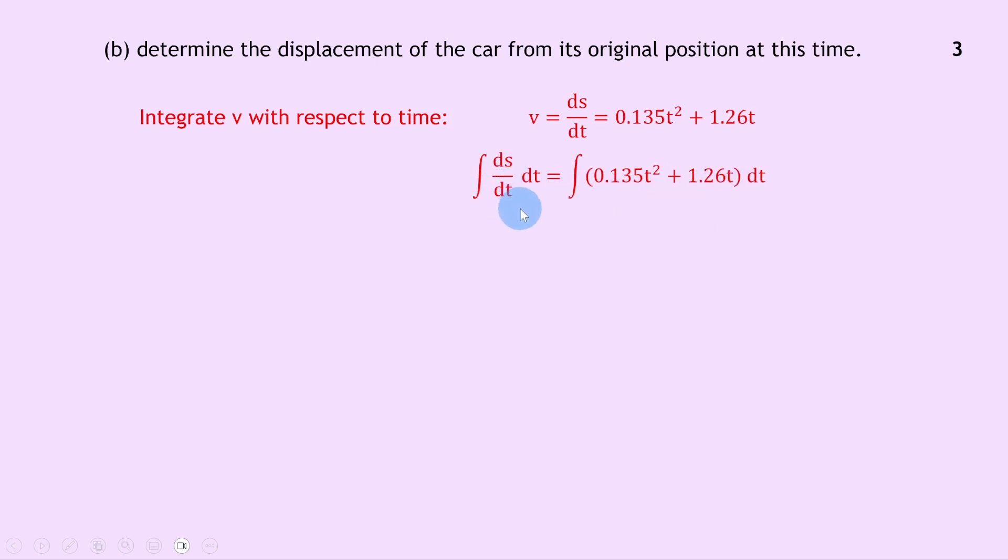Remember ds by dt is just our velocity v, so if we integrate velocity we get displacement. So we get s equals, and to integrate these parts we raise the power by 1 and divide by the new power. So we have 0.135t cubed over 3 plus 1.26t squared over 2 plus the constant c. Let's simplify these fractions so we have s equals 0.045t cubed plus 0.63t squared plus c.